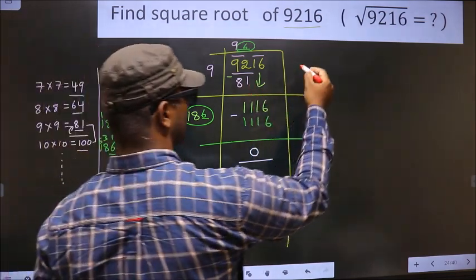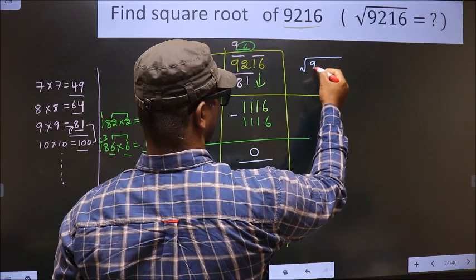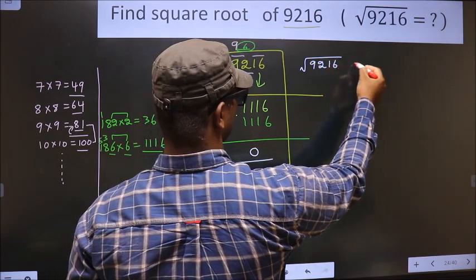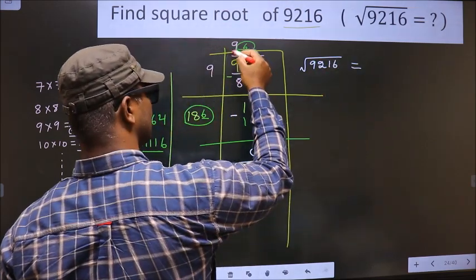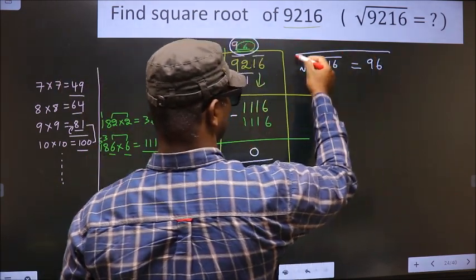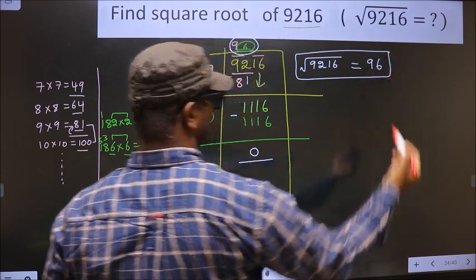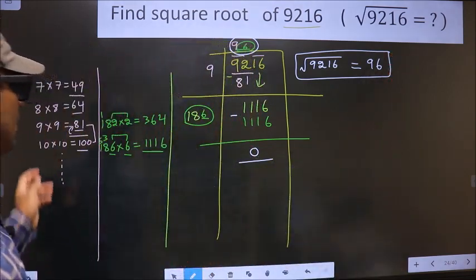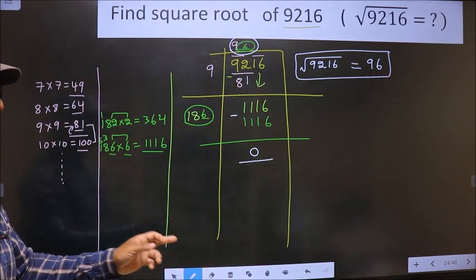And the square root of 9216 is this number, that is 96. So this is our answer. Am I clear?